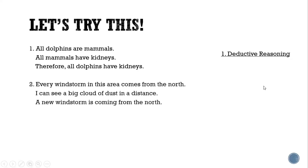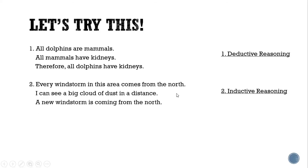Second example: every windstorm in this area comes from the north; I can see a big cloud of dust in the distance; conclusion — a new windstorm is coming from the north. Is it inductive or deductive? It is an example of inductive reasoning, because the two premises are based on observation, and we came up with a conclusion based on a series of observations.